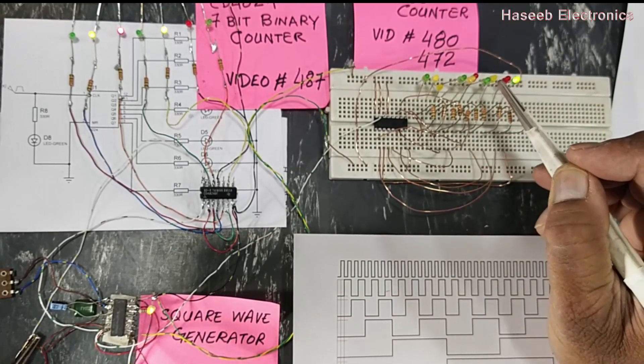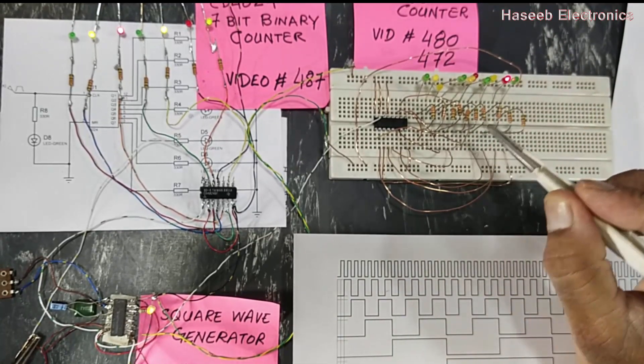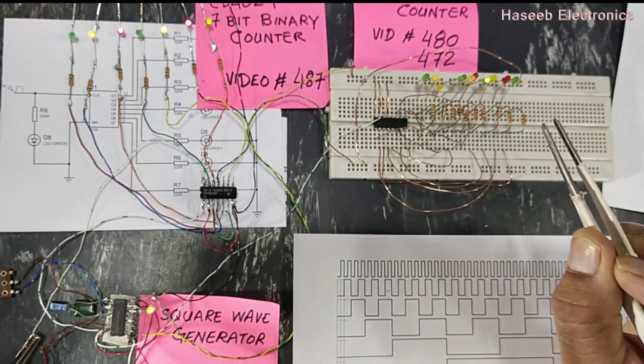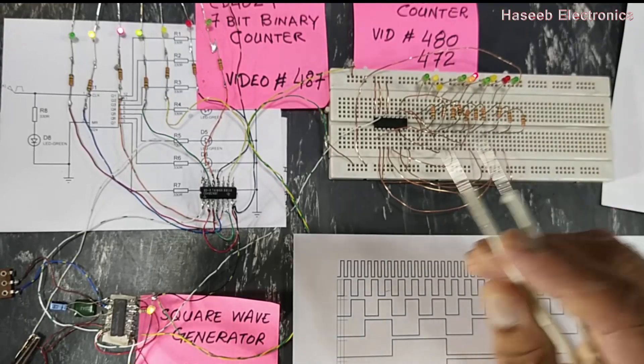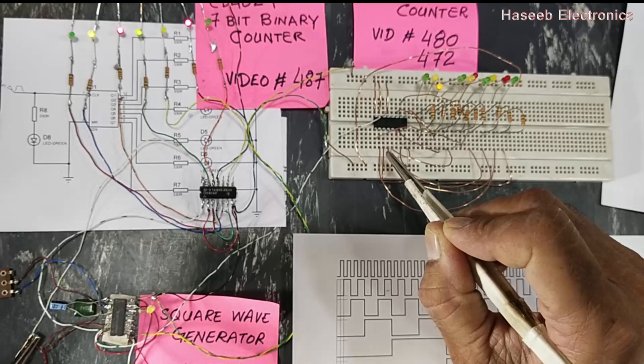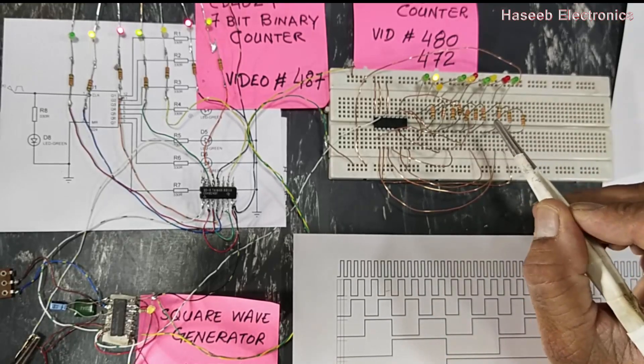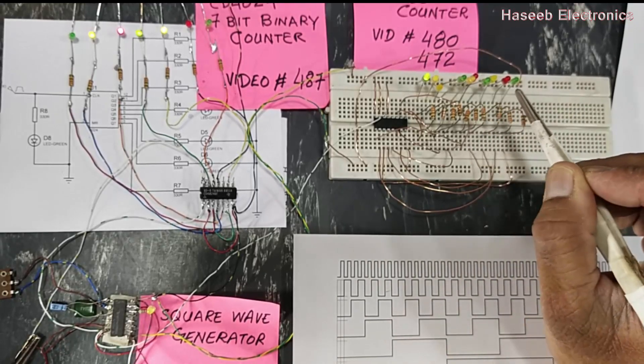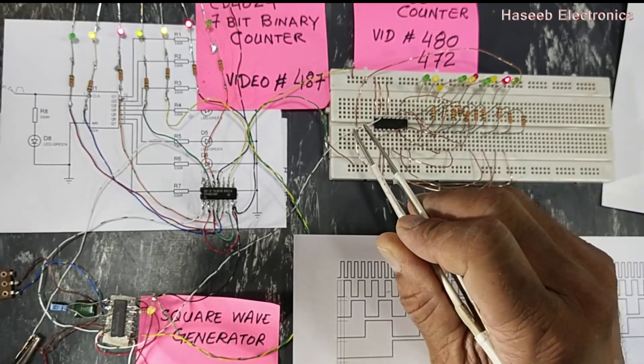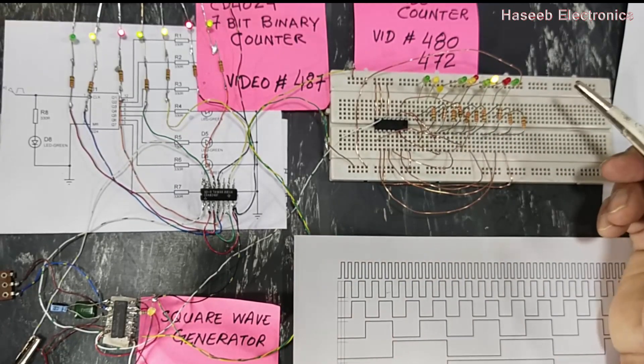If we want to minimize the cycle up to any stage, we connect the reset pin to that output. For example, if we want to terminate at output number five, output number six will connect to reset. When five cycles complete, the sixth pulse will reset this circuit and it will start from zero.